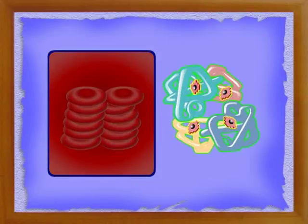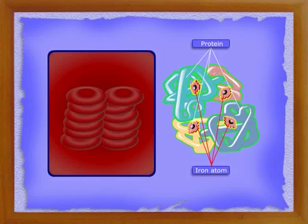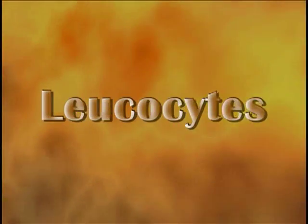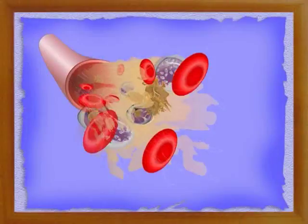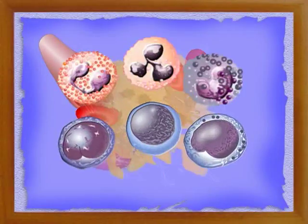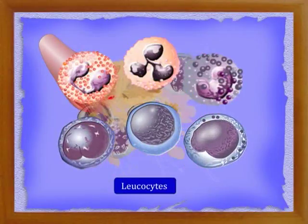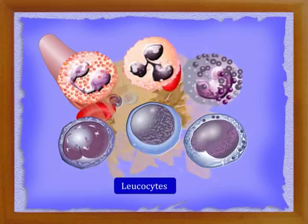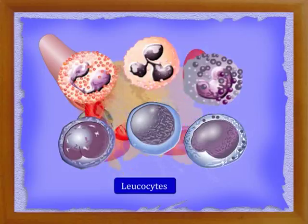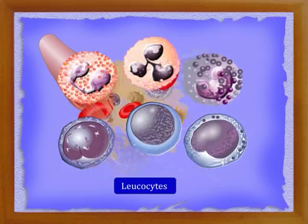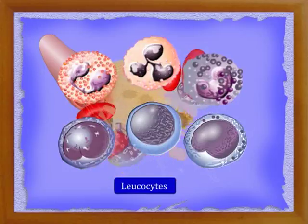Hemoglobin is a large molecule; it contains a protein molecule and four atoms of iron. White blood cells, or leucocytes, are comparatively larger and irregular in shape, like an amoeba. Each leucocyte has a nucleus.